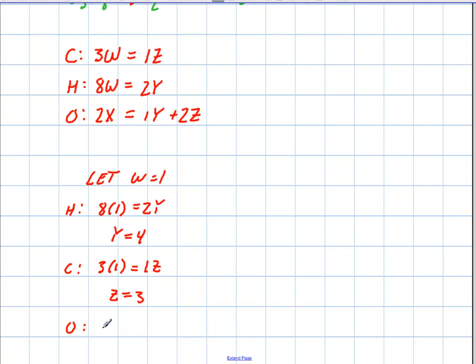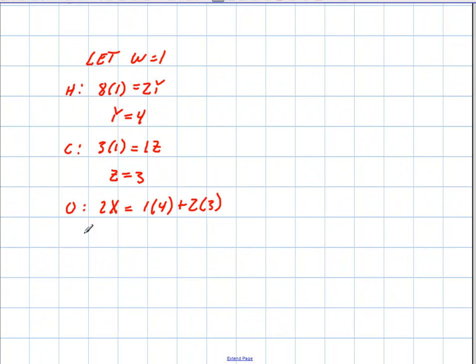So 2X is what we're looking for. That's the only one we don't have. 2X equals 1Y, which we know is 1 times 4, plus 2Z, which is 2 times 3. I'm going to extend the page down here a little bit. That was oxygen. So I know that 2X is going to equal 4 plus 6 is just going to be 10. And so X is just going to be 5.